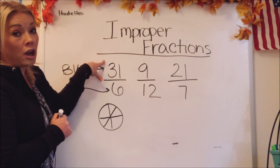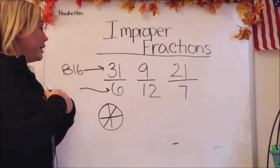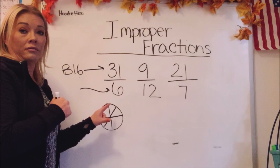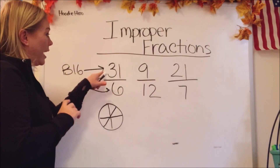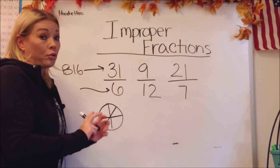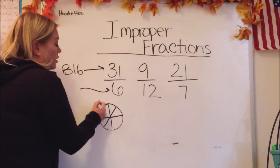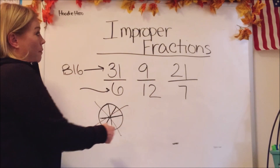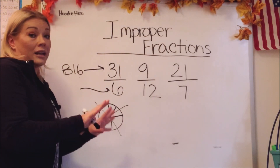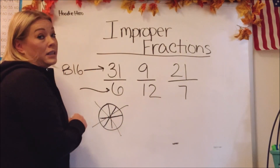The numerator, or top number, is supposed to tell us how many we're talking about or how many we have. So can we have 31 parts if there are only six total? That just wouldn't make sense. We can't have more parts than there are total. We can't take 31 parts when there are only six to begin with, so it's improper. We need to make it into a mixed number, which would then make sense and be practical.